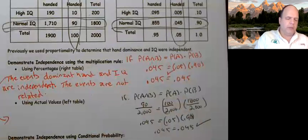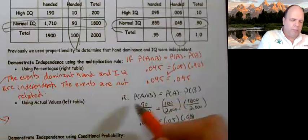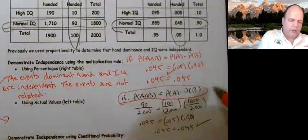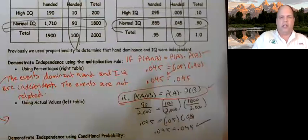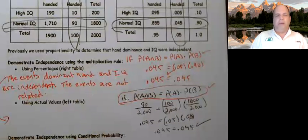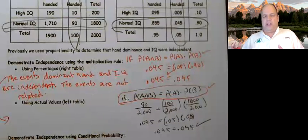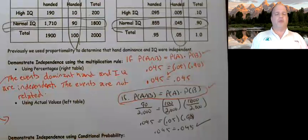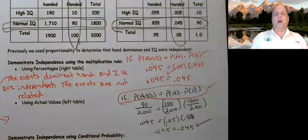So that's the multiplication rule. Please memorize it — this is probably the easiest way to check independence. P(A and B) equals P(A) times P(B) if independent. If that's a true statement, then they're independent. You need to know that rule.